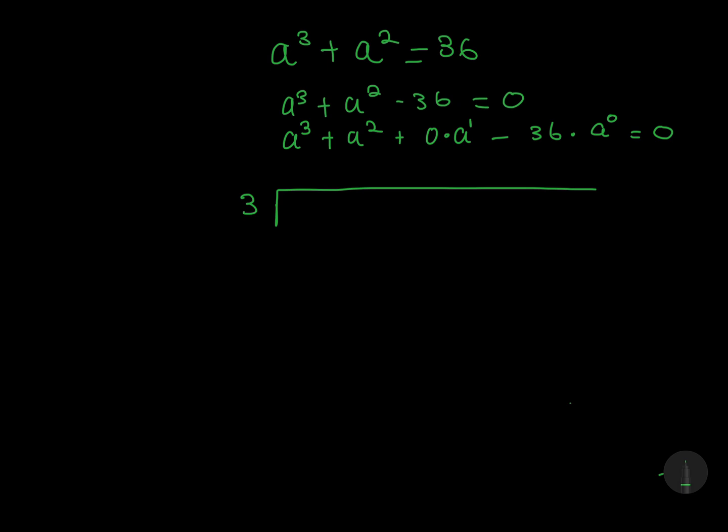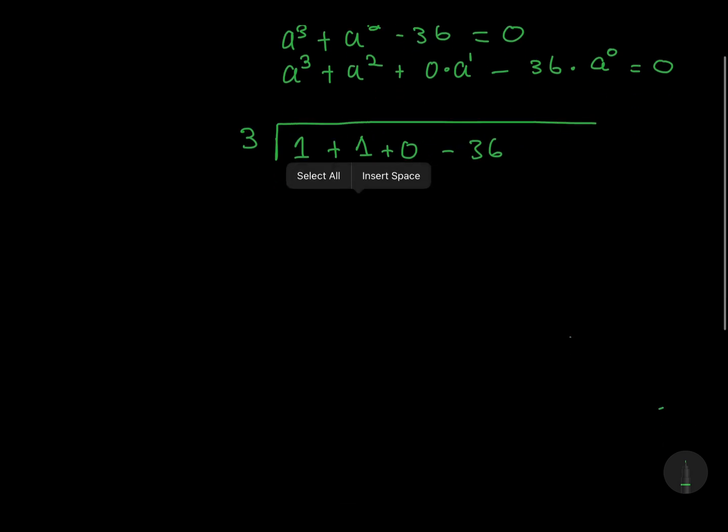From here, I'm going to take the coefficient of our equation. a³ has a coefficient of 1, a² has a coefficient of 1, a¹ has a coefficient of 0, a⁰ has a coefficient of -36. So, I'm going to put 1 here, the first coefficient, and I'm going to say 1 times 3, which is 3, positive 3.